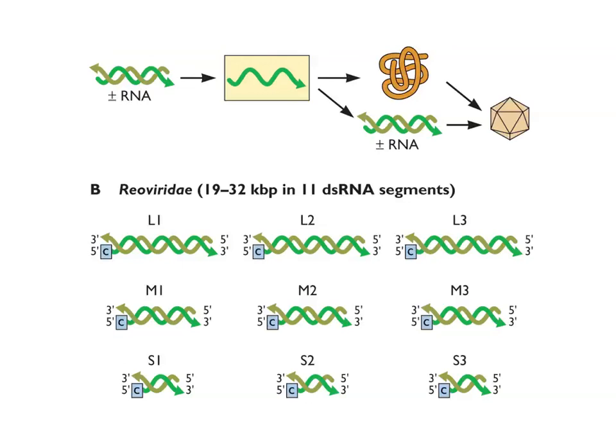The double-stranded genome cannot be read by ribosomes even though it contains a plus strand — it's inaccessible, so a free single-stranded plus-strand mRNA is needed for translation. A student asks: is there a system to ensure every segment is incorporated into the virion? Yes, certainly — for some viruses we know specific mechanisms that ensure the right number of segments are packaged; for others the mechanism isn't fully understood. Without such a mechanism you would make a lot of non-infectious particles.